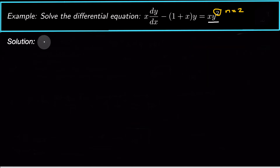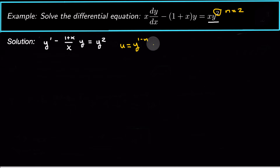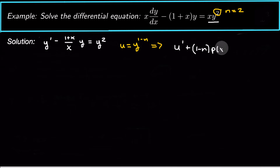First, put this in standard form: y prime minus (1 + x)/x · y equals y squared. Whenever you make the substitution u equals y to the 1 minus n to a Bernoulli equation, you always end up with u prime plus (1 minus n) · p(x) · u equals (1 minus n) · g(x).